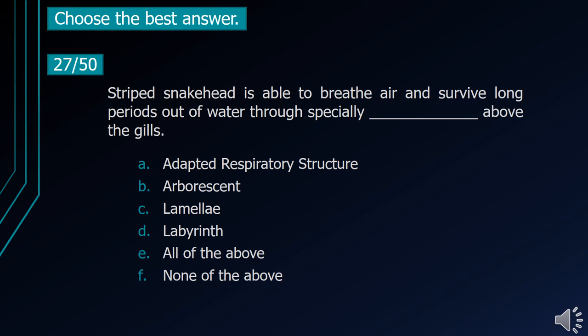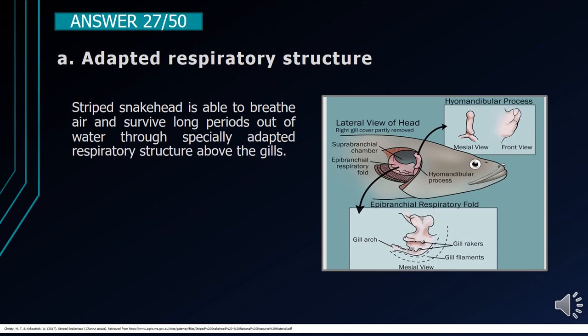Number 27. Striped snakehead is able to breathe air and survive long periods out of water through specially blank above the gills. A. Adapted respiratory structure. B. Arborescent. C. Lamellae. D. Labyrinth. E. All of the above. F. None of the above. The correct answer is letter A, Adapted respiratory structure. Striped snakehead is able to breathe air and survive long periods out of water through a specially adapted respiratory structure above the gills.